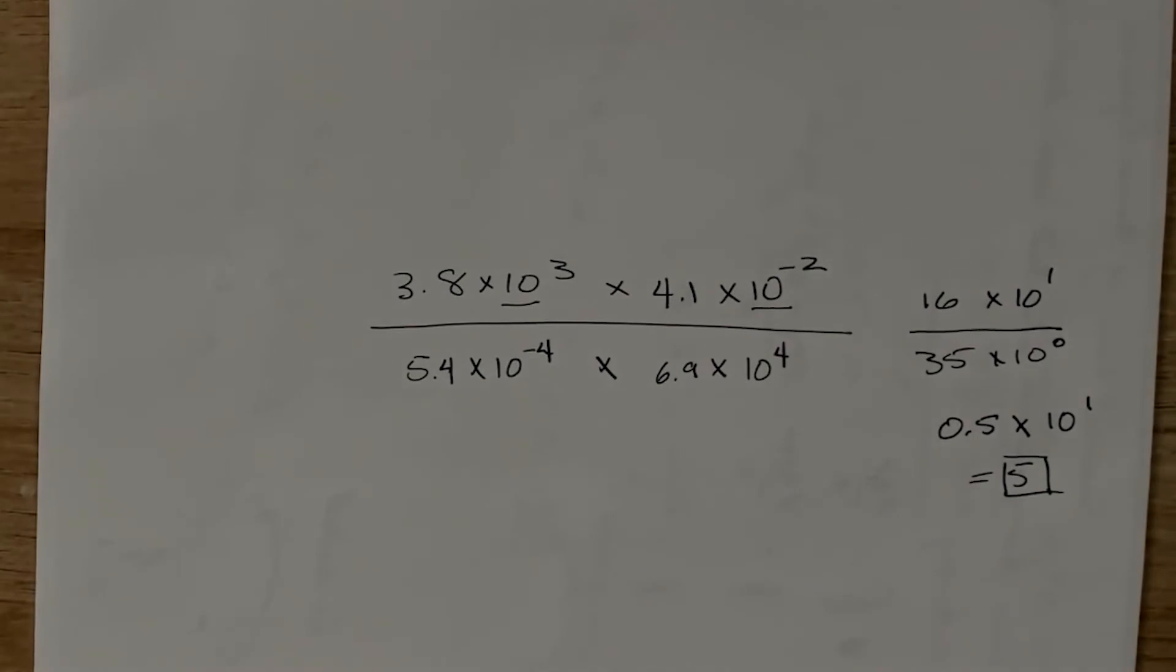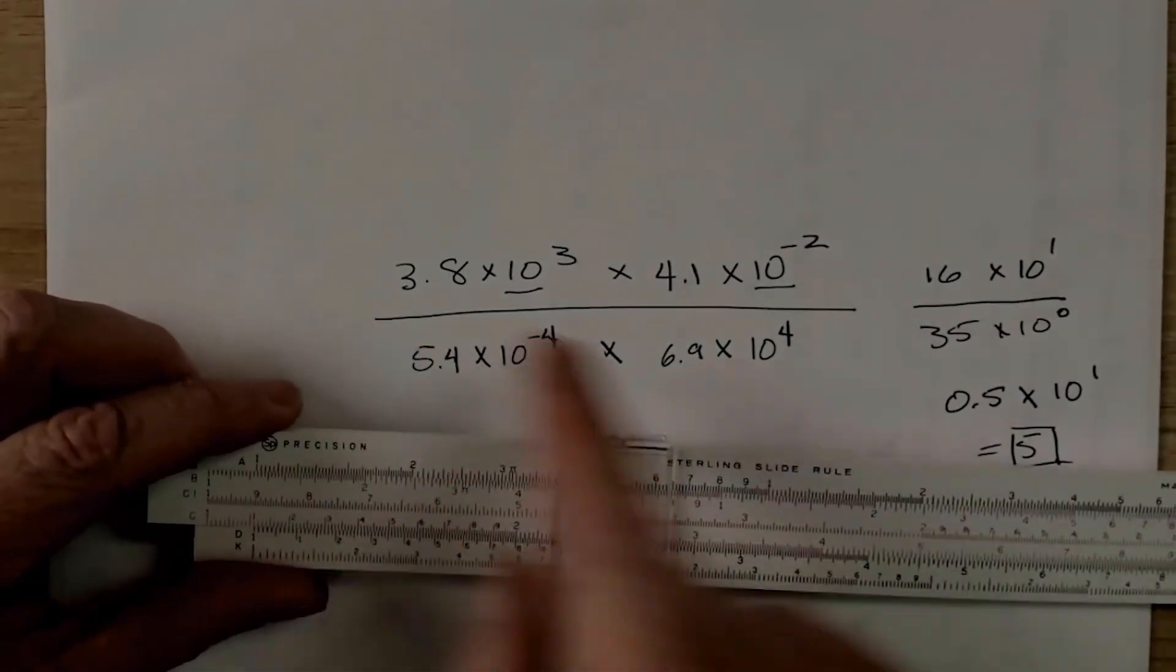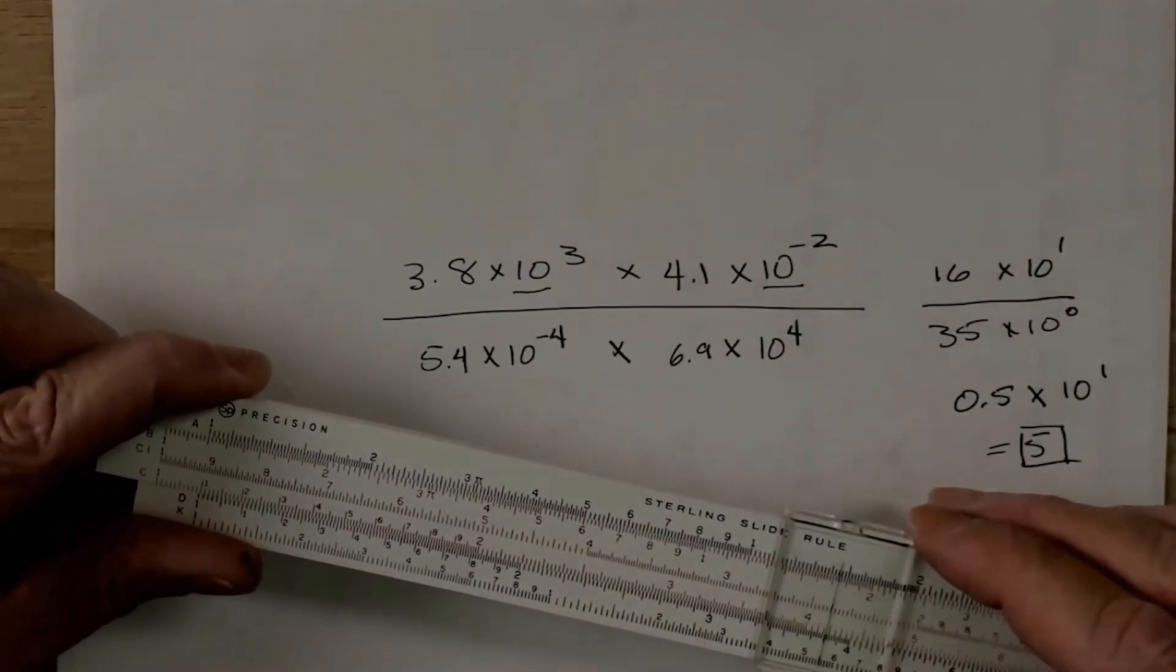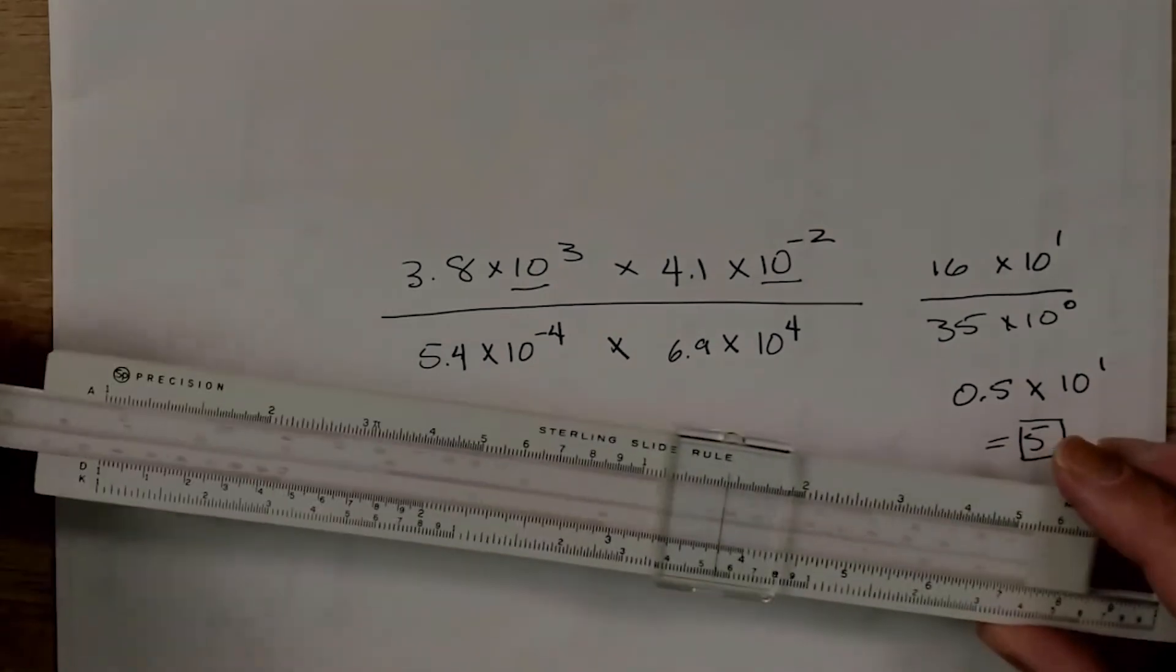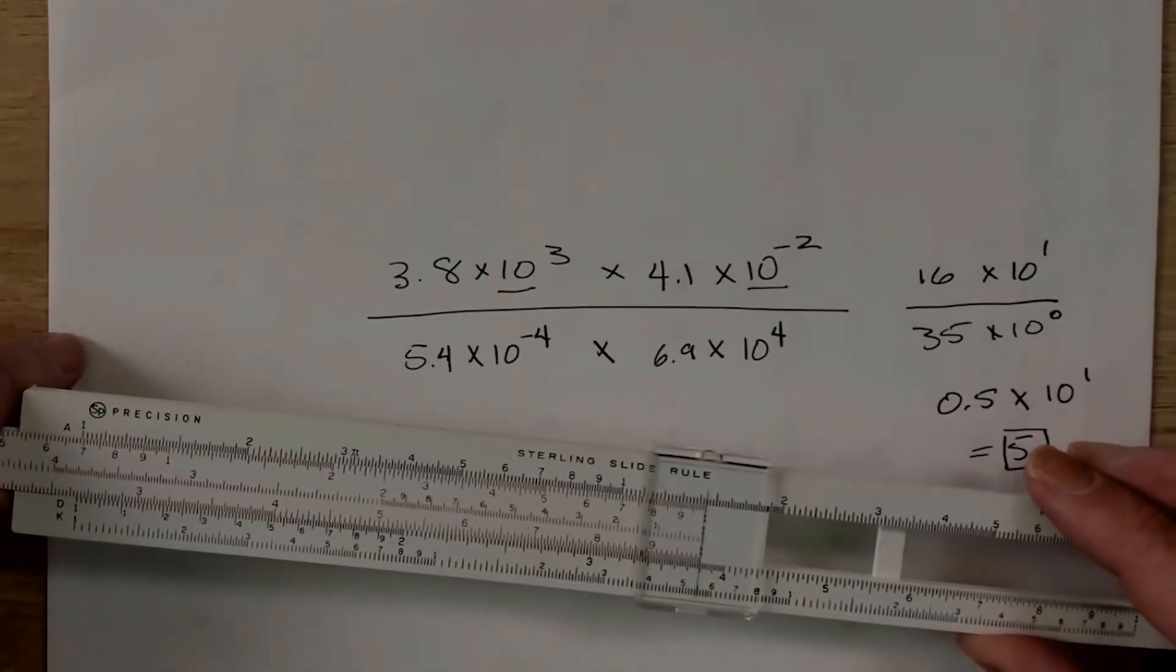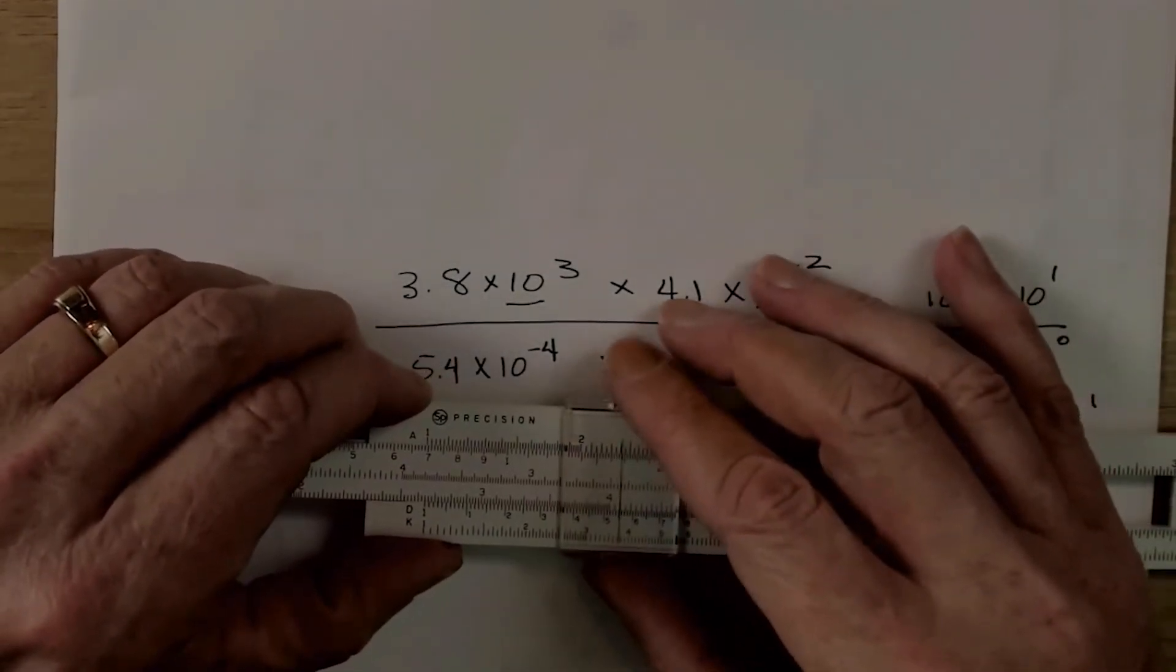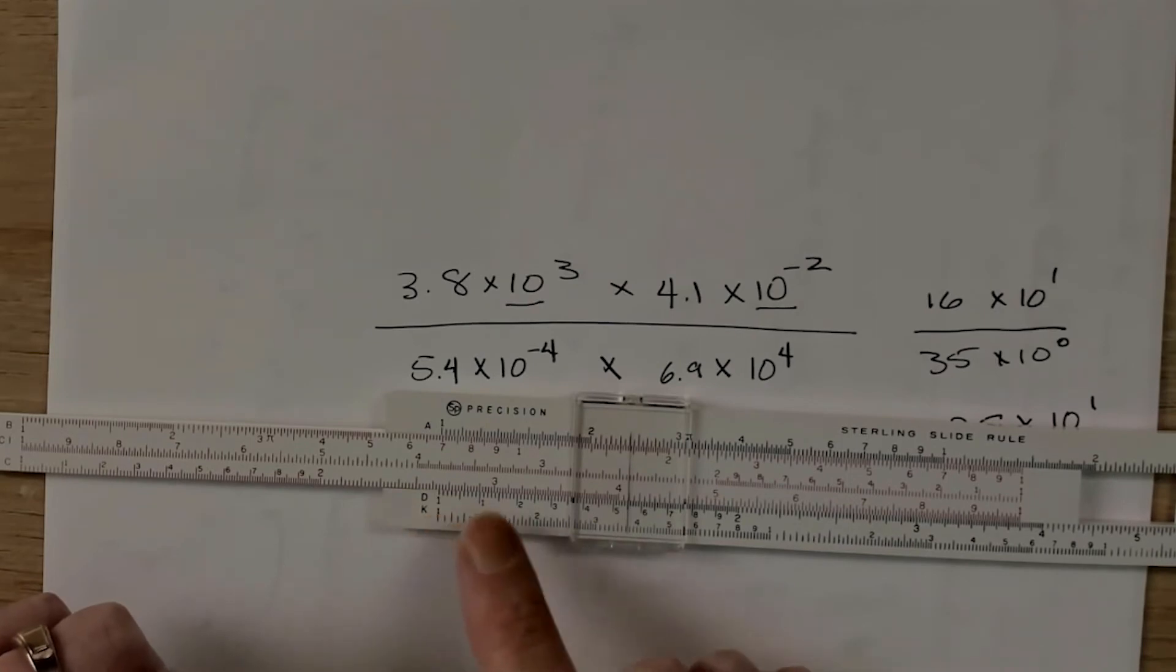So, first thing that we're going to do is we're going to find 3.8. So, here is 3.8 right here. And then we want to multiply that by 4.1. So, we need to put an index and we can use the right or the left one over it. And we want to multiply that by 4.1.